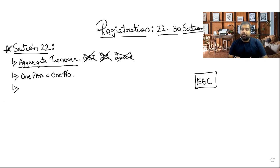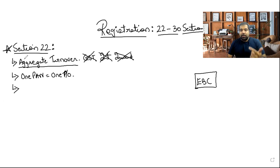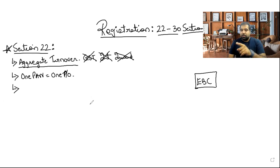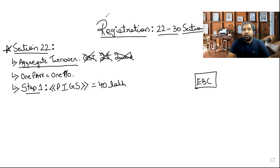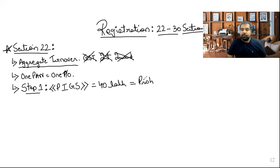In the exam they may give you diesel supply, oil supply, petrol supply, alcohol supply to confuse you — but aggregate turnover is the addition of everything: taxable, non-taxable, exempt, export. Once you calculate that, apply three steps. Step 1: Check if the company is doing PIGS — P-I-G-S. If doing PIGS, your turnover limit is 40 lakhs; up to that limit you don't have to register.